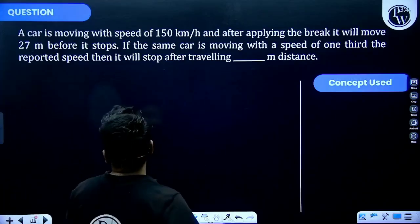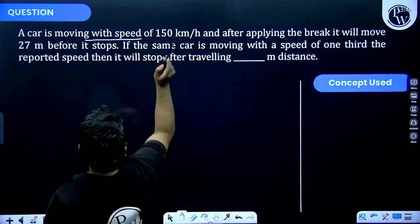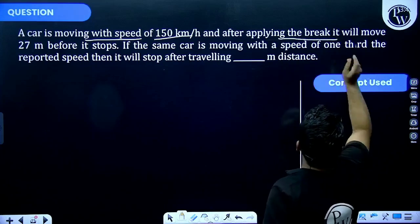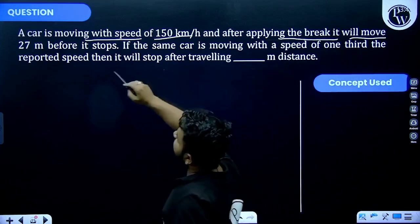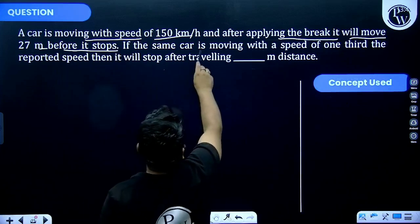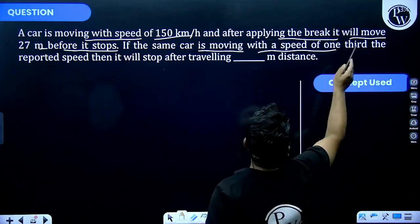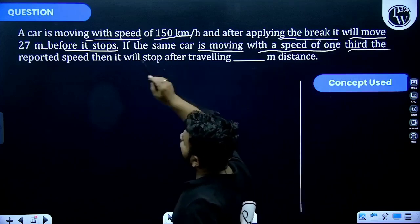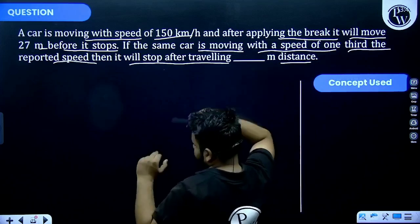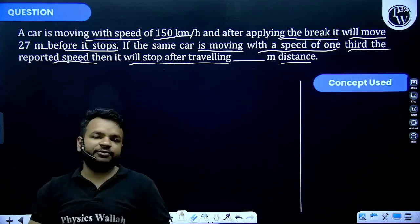Let's see this problem. A car is moving with a speed of 150 kilometers per hour and after applying the brake it will move 27 meters before it stops. If the same car is moving with a speed of one-third the reported speed, then it will stop after traveling how much meter? So we have to calculate if the velocity of car becomes one-third of the initial velocity, then how much distance is required for the stopping of the car.